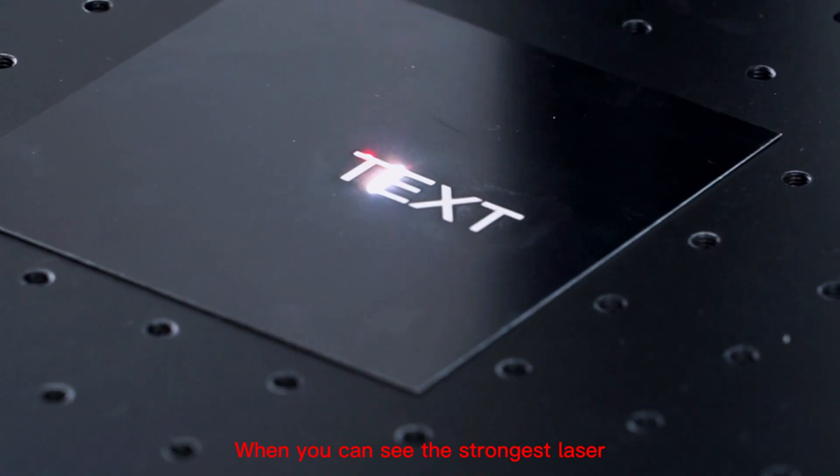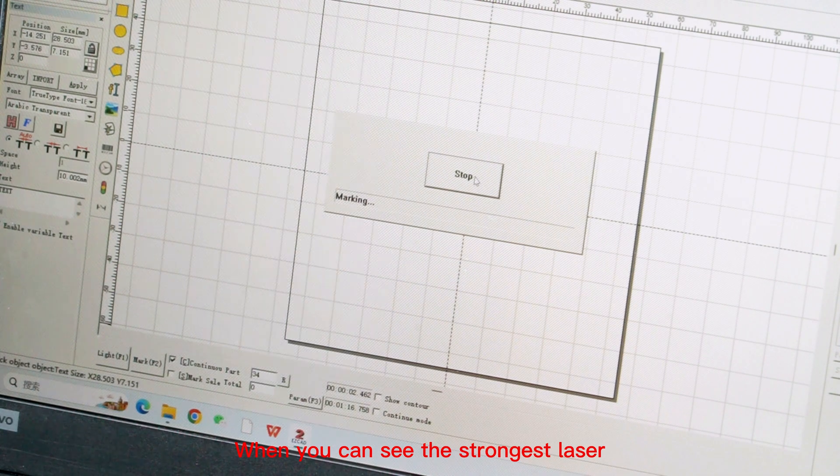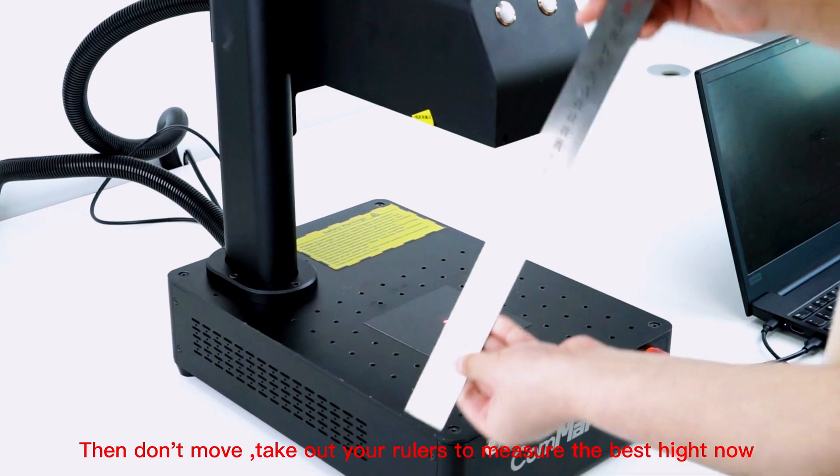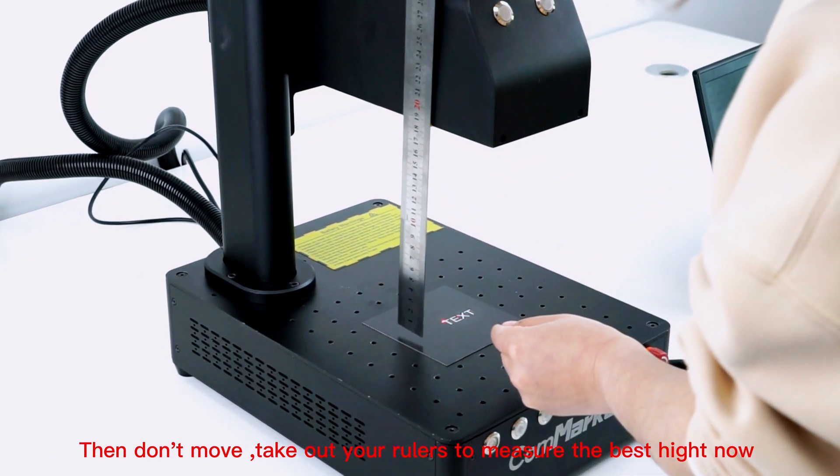When you can see the strongest laser, stop marking. Then don't move and take out your ruler to measure the best height now.